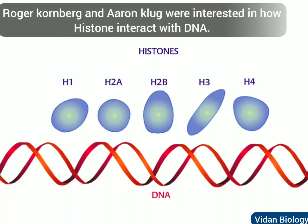Roger Kornberg and Aaron Klug were interested in a class of proteins called histones and how they interact with DNA. There are five different classes of histones: H1, H2A, H2B, H3, and H4.